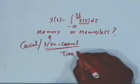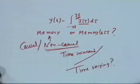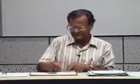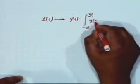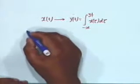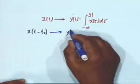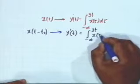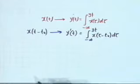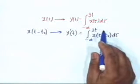Is this a time-invariant or time-varying system? To test this, we apply the definition: X(T) leads to Y(T) = integral from minus infinity to 3T of X(tau) d(tau). If I delay the input by T0, then the new output Y'(T) shall be equal to the integral from minus infinity to 3T of X(tau − T0) d(tau). All that changes is the input; the limits of integration are parameters of the system and remain the same.